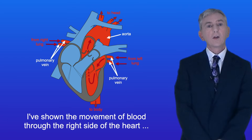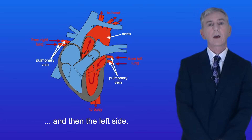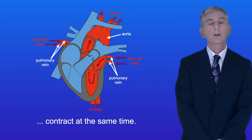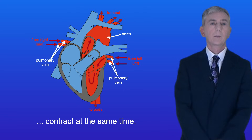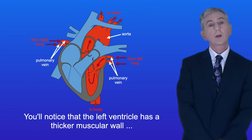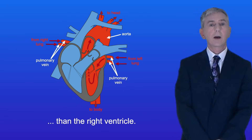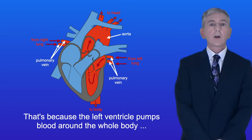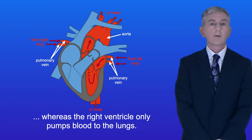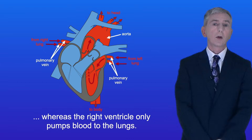Although I've described the right side and then the left side separately, you need to understand that the right and left sides of the heart contract at the same time. You'll notice that the left ventricle has a thicker muscular wall than the right ventricle. That's because the left ventricle pumps blood around the whole body, whereas the right ventricle only pumps blood to the lungs.